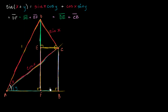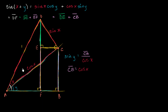Now let's look at triangle ACB. How do we find CB? Sine of y equals CB over the hypotenuse, and the hypotenuse here is cosine of x. Multiplying both sides by cosine of x, the length of segment CB equals cosine of x times sine of y. We've just shown that CB equals that term right there.